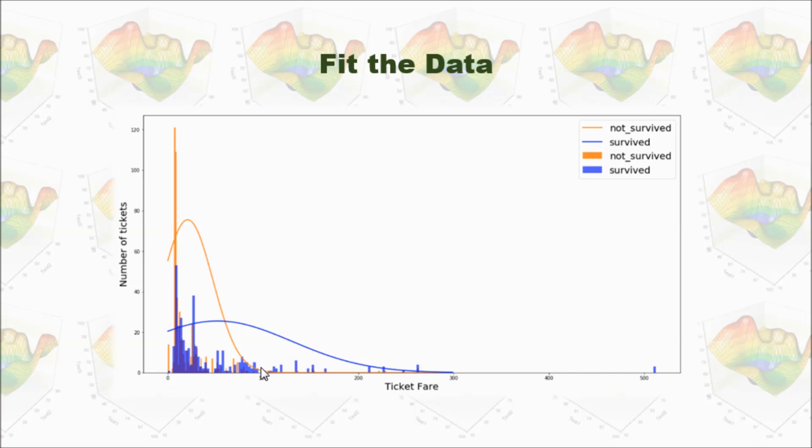And then, fit with normal distribution. You can see, all the not survived tickets got maximum value here. And all those survived tickets got maximum value here.